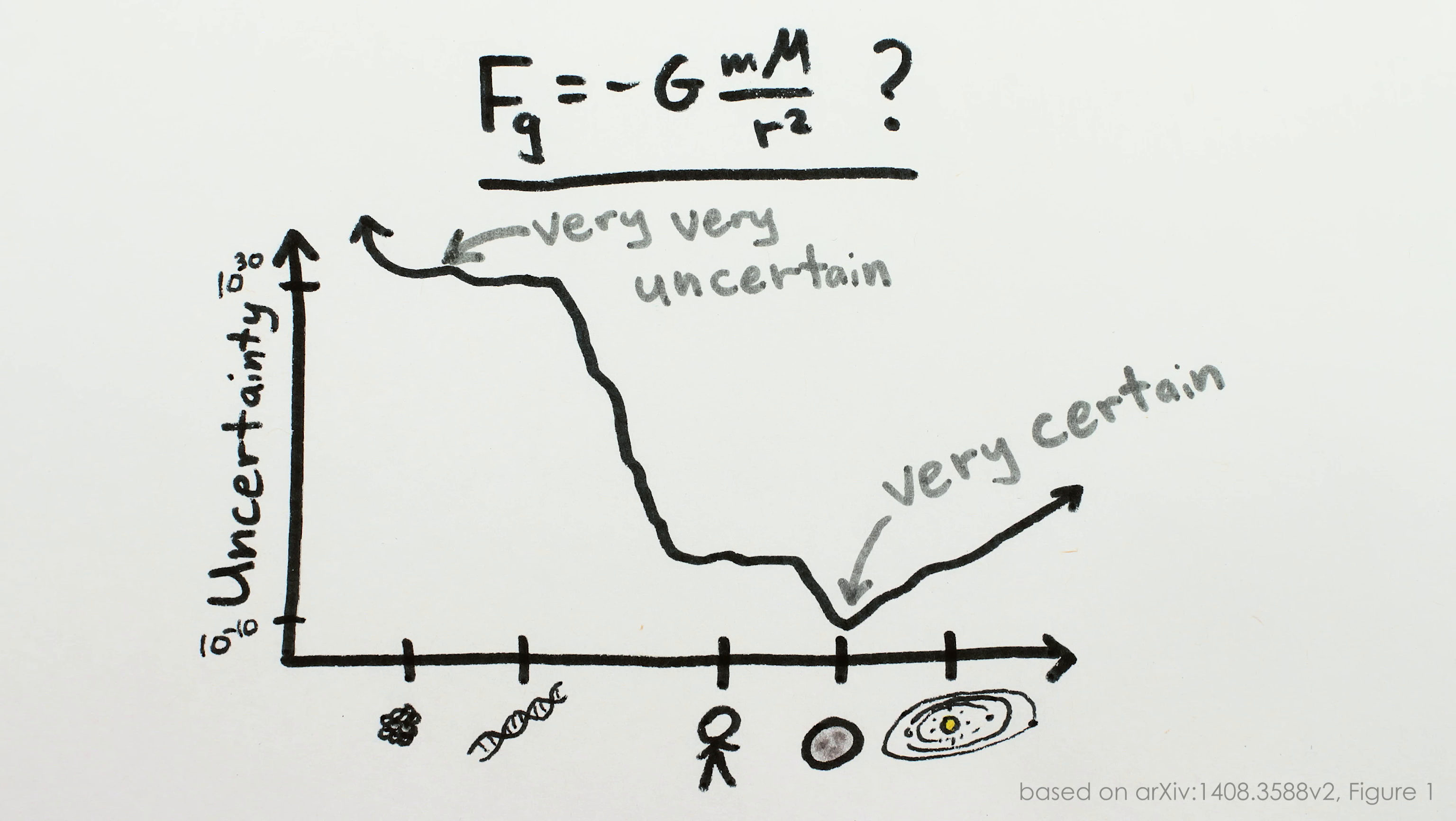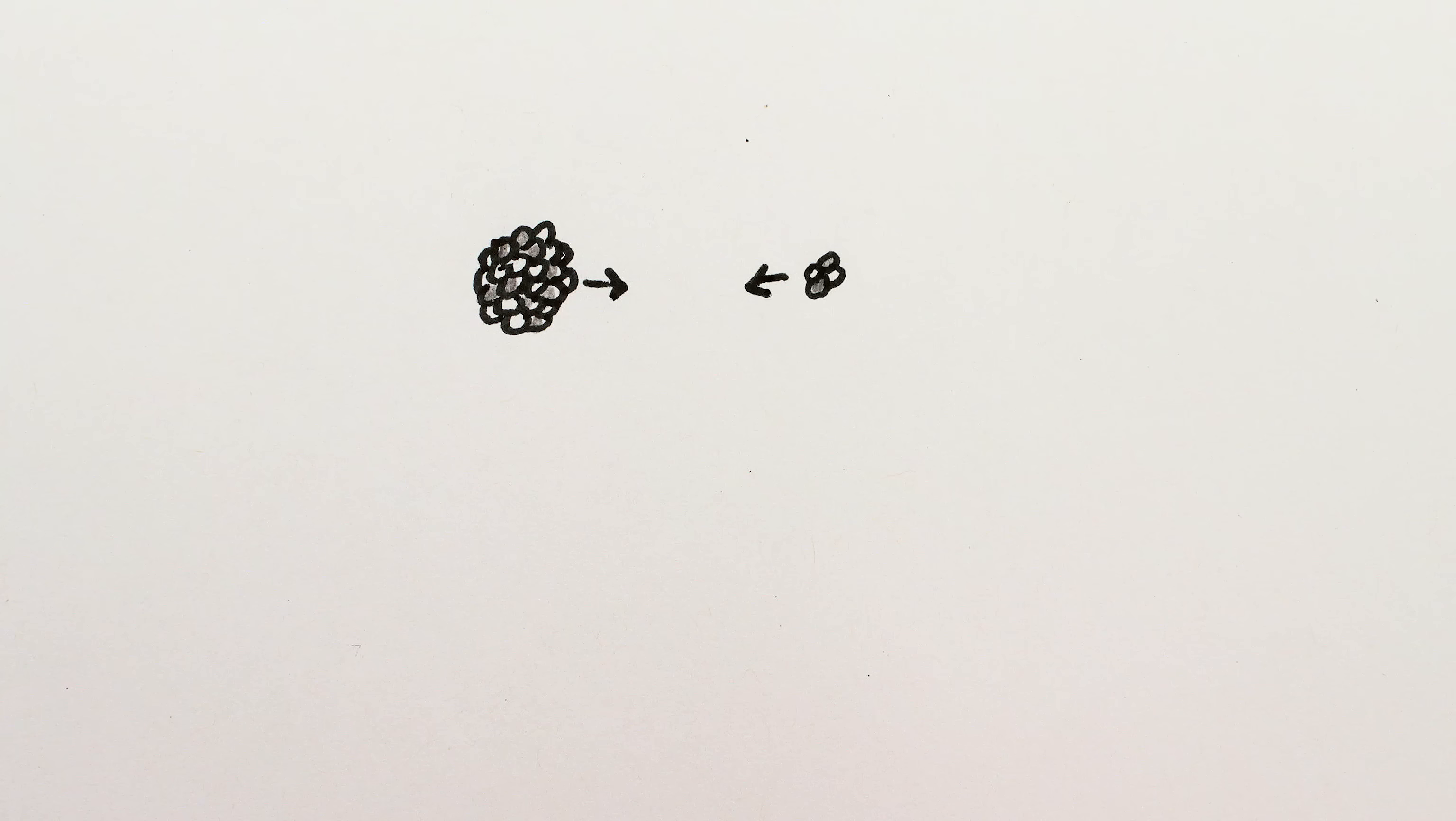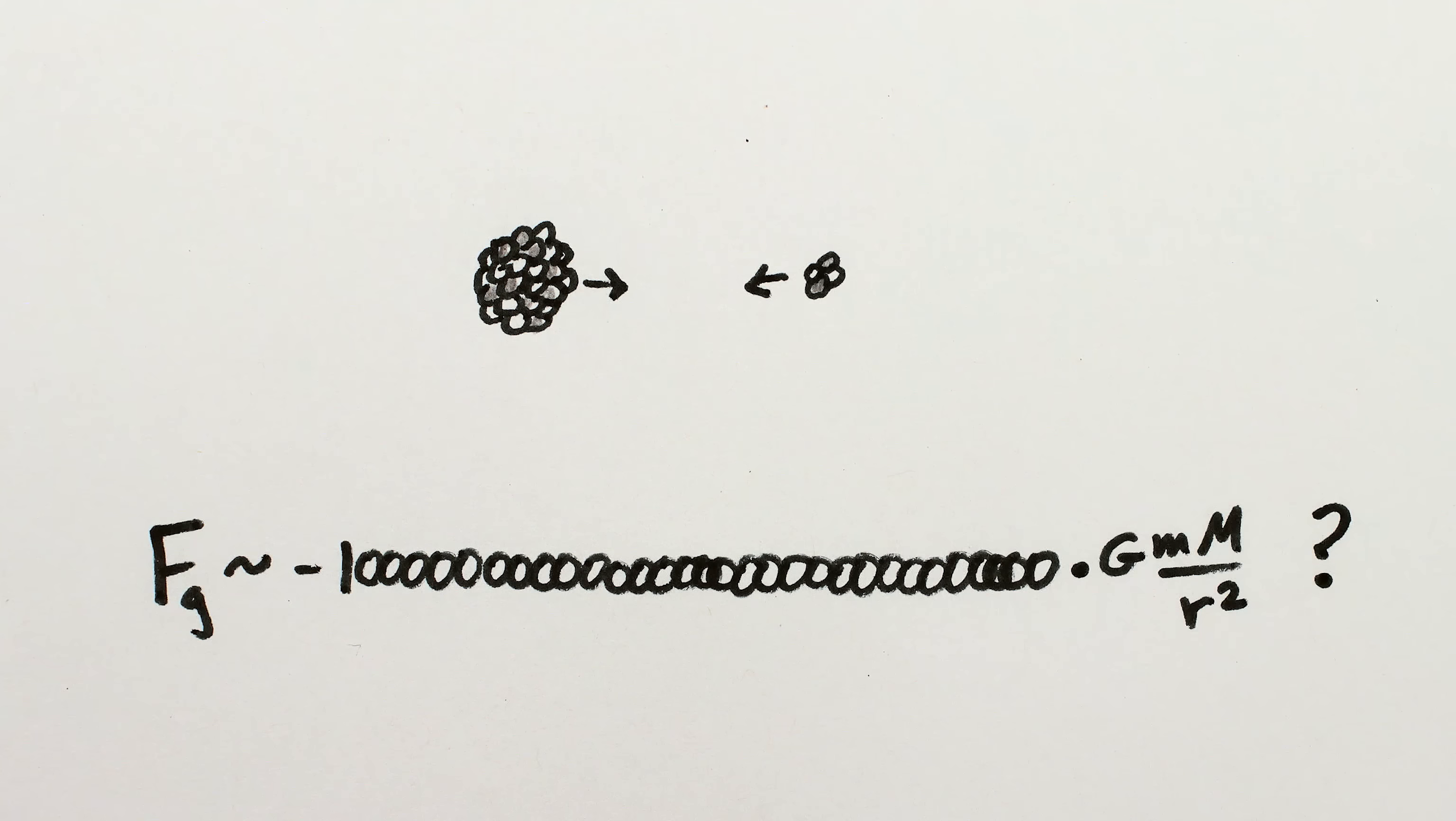Our experimental understanding of short-distance gravity is so bad that gravity at the scale of the atomic nucleus could actually be as much as a quadrillion quadrillion times stronger than Newton's Law of Gravitation predicts. That's a huge range.